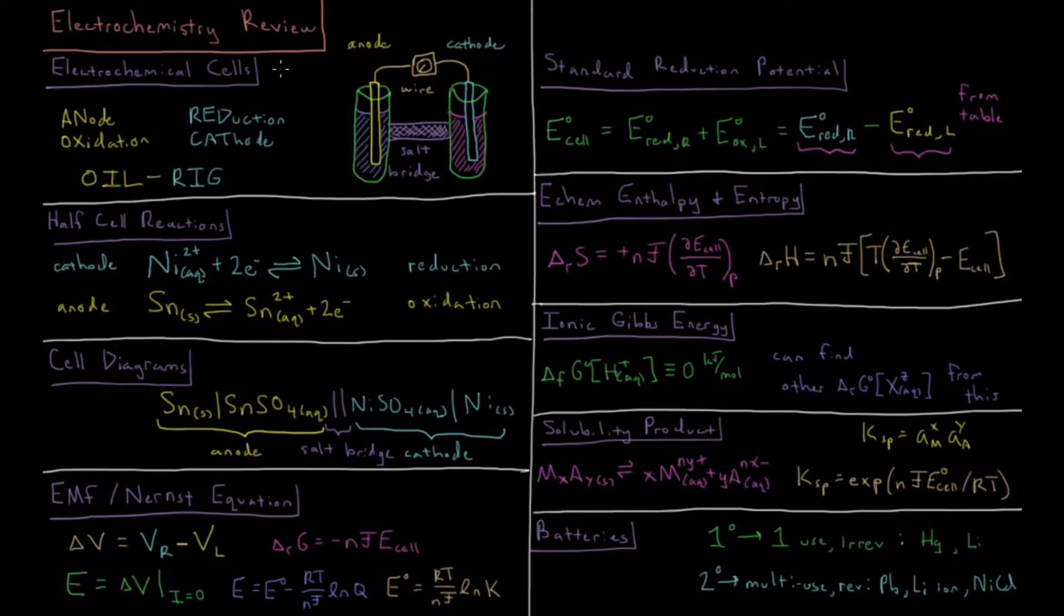We have an anode where an oxidation reaction occurs and a cathode where a reduction reaction occurs. We note the acronym OIL RIG: oxidation is loss of electrons and reduction is gain of electrons.